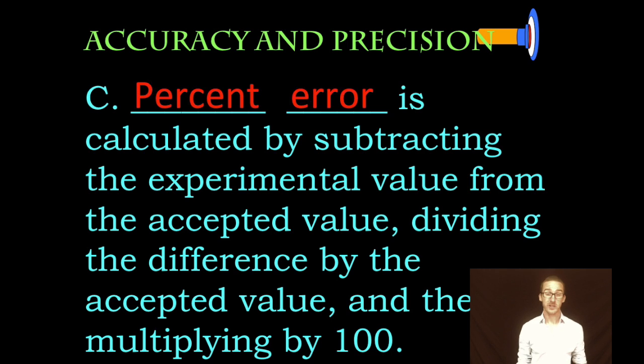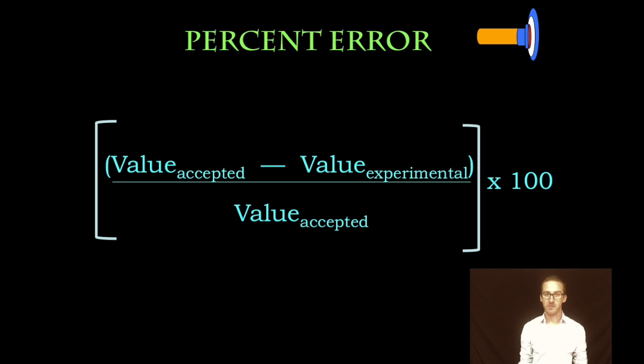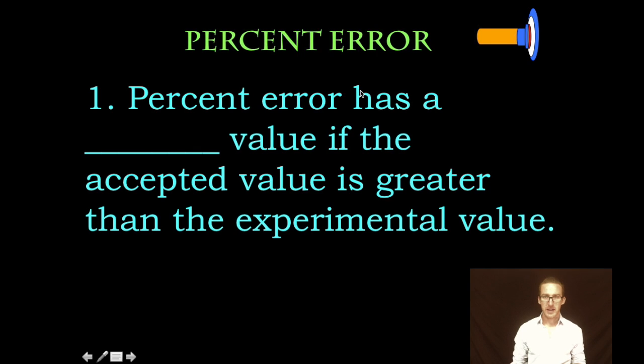We then divide the difference by the accepted value again and multiply by 100. Now you are provided with the percent error formula on your formula chart: accepted value minus experimental divided by the accepted value times 100. Times, times—multiply.